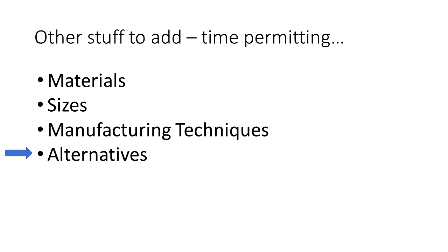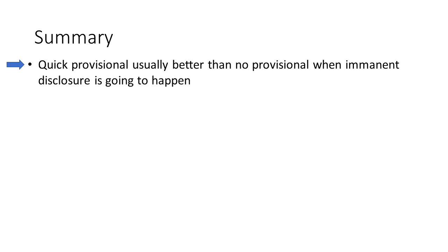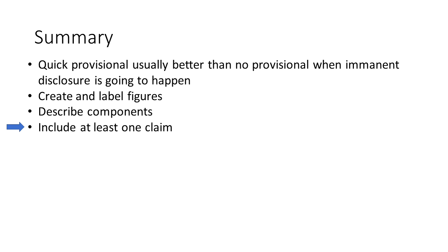So let's summarize about the quick provisional. A quick provisional is usually better than no application at all when imminent disclosure is going to happen. If you find yourself in a situation where there is suddenly a good opportunity to present or discuss an invention, having a quick provisional patent application on file is usually better than disclosing it without any patent application at all. Start by coming up with your figures, labeling the parts and numbering the parts. Once you've done that, describe the components and I recommend including at least one claim.